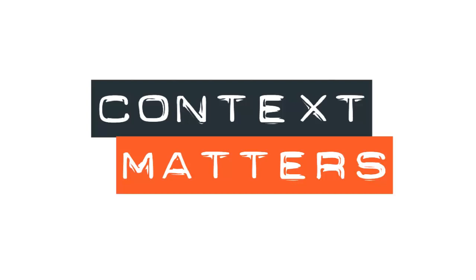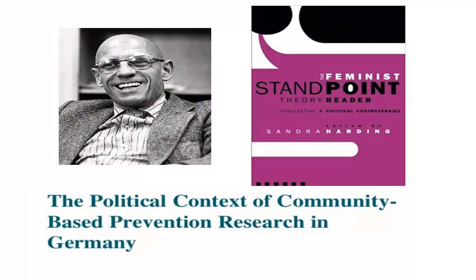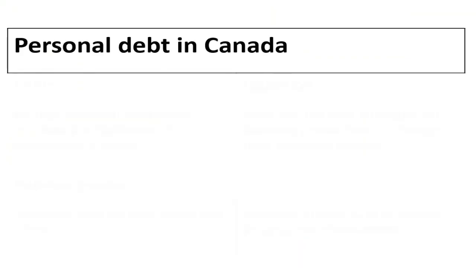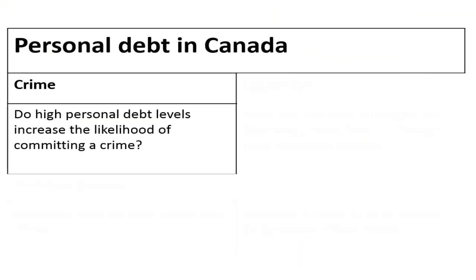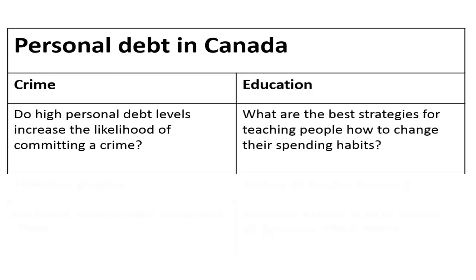When thinking of a question, you need to consider what context your research is situated in. Sometimes this is called situating your research in theory. What's considered a theory varies by discipline. It could mean a specific social or cultural theorist, like Michel Foucault, or a school of thought like feminist standpoint theory. Or it could refer to research context, or what the existing research on the topic is in your field, and what approach or viewpoint it takes. For example, we could look at the topic of personal debt in Canada from the perspective of criminology, and ask whether having a high level of personal debt makes someone more likely to commit crime. Or, from an education perspective, we might want to know what methods work best for teaching people how to stay out of debt. The questions we ask are determined by the lens or context we approach it from.